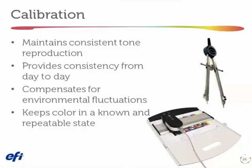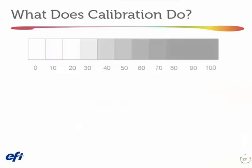Calibration will compensate for environmental fluctuations. Your digital press is probably even more sensitive than a conventional press to environmental variables such as temperature and humidity. Finally, calibration keeps colors in a known state, meaning I can easily go back and do reprints of a job the customer accepted days or months later, and they'll be satisfied.